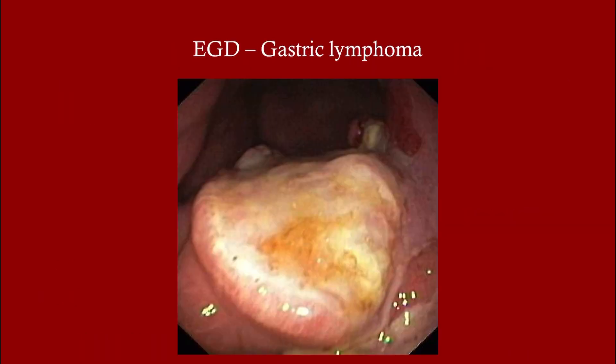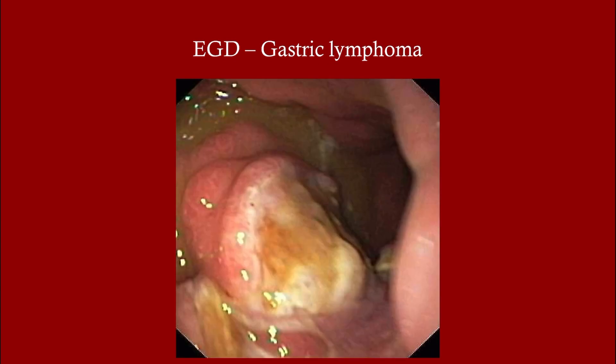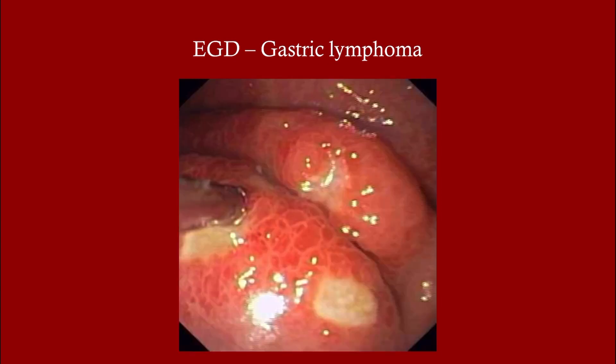This is what a gastric lymphoma looks like on endoscopy. You can't tell what kind of cancer it is — or if it's even cancer at all — just by looking at it, so you've got to get the biopsy. Don't worry about resecting the whole thing if it's big; just get the biopsy, find out what it is, and then deal with removing the rest later. You're not going to be able to remove an entire tumor in most instances with an EGD.